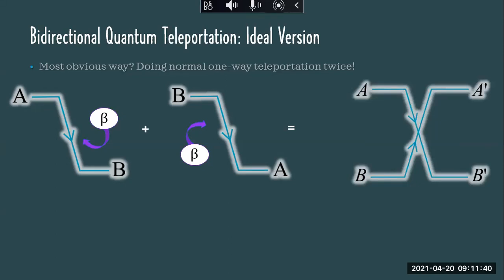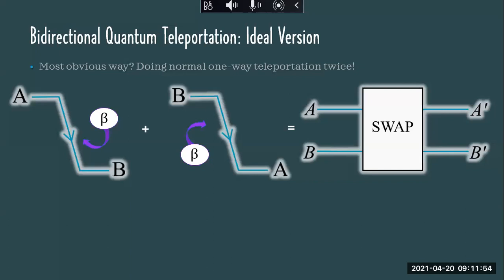Keep in mind, this is just the ideal version of bi-directional quantum teleportation. We're assuming that we have two pairs of perfectly entangled qubits. We will call this operation the swap operation, because it's a perfect swap of information between Alice and Bob. Now, this is great, but it's very difficult to implement, because in the lab, entanglement itself is very hard to create. Most of the time it just doesn't happen, and when it does happen, sometimes it's not even perfectly entangled. So for this protocol we need two pairs of entangled quantum bits, and it's not easy.